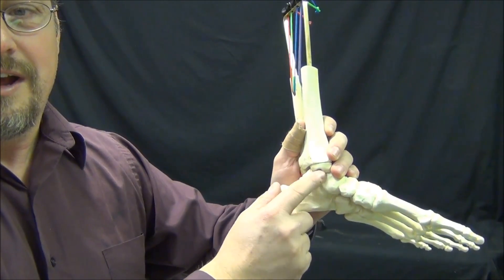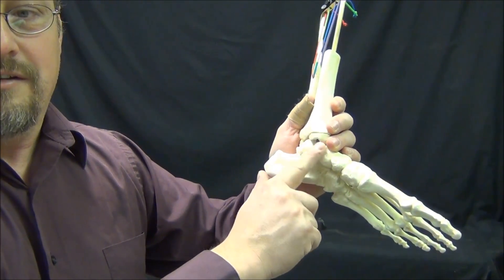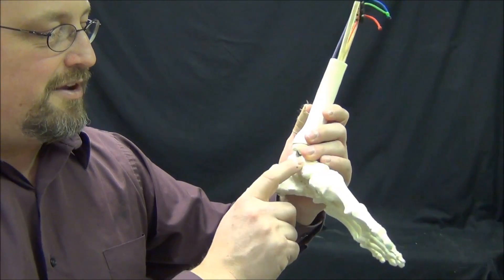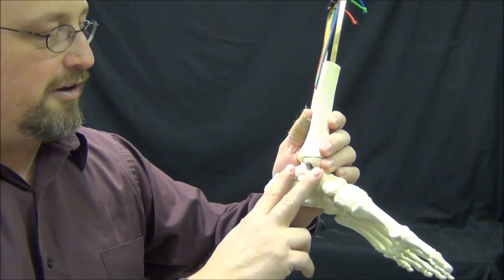There's also one on the medial side that's replicating the anchoring of the medial malleolus to the navicular, the talus, the calcaneus, and so forth.